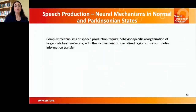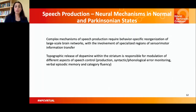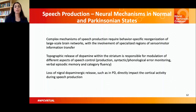In summary, there are complex mechanisms of speech production that require behavior-specific reorganization of large-scale brain networks with the involvement of specialized regions of sensorimotor information transfer. There is a topographic release of dopamine within the striatum, which is responsible for modulation of different aspects of speech control, including production, syntactic and phonological error monitoring, verbal episodic memory, and category fluency. Loss of nigral dopamine release, such as in PD, directly impacts cortical activity during speech production.